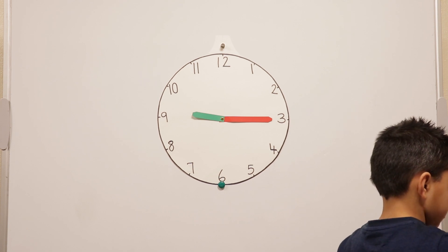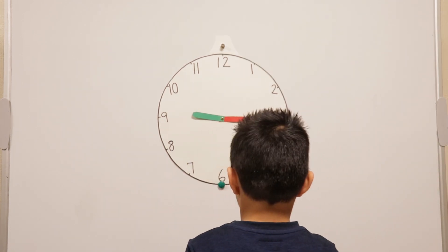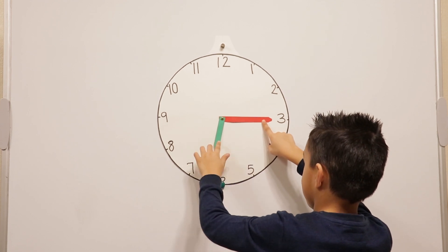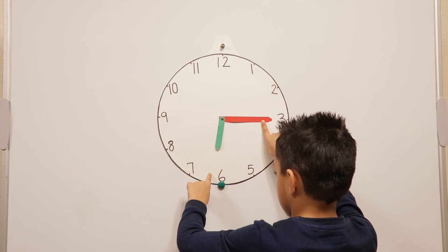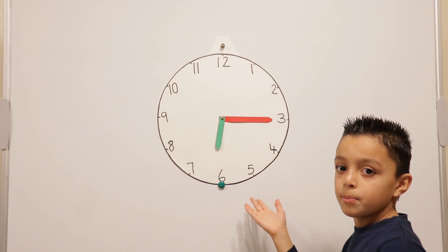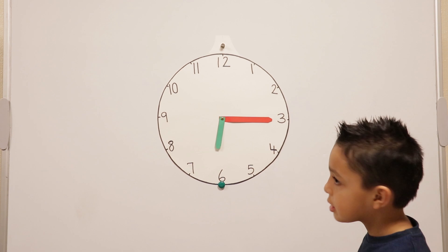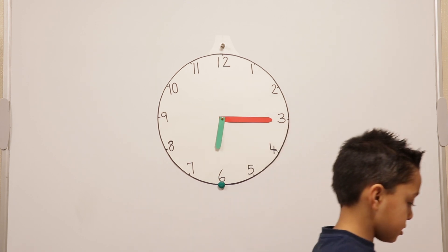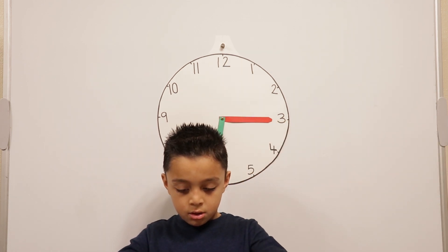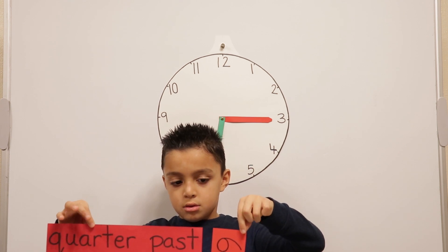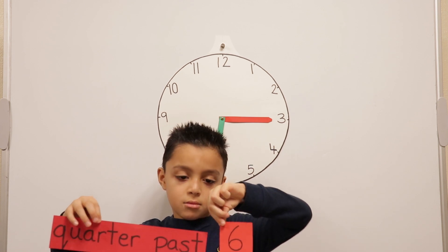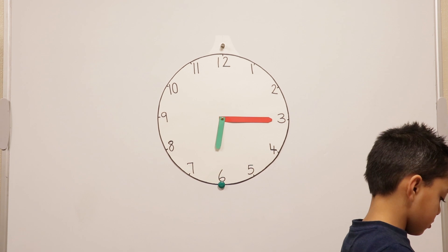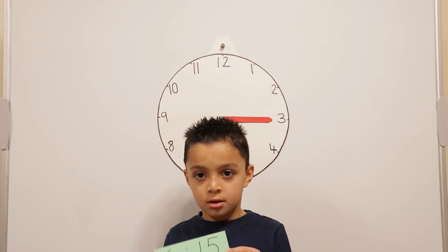What about quarter past six? The minute hand stays on the three, and the hour hand is a quarter of the way between six and seven — that's quarter past six. And how would we write quarter past six? Quarter past six, and the other way: six fifteen.